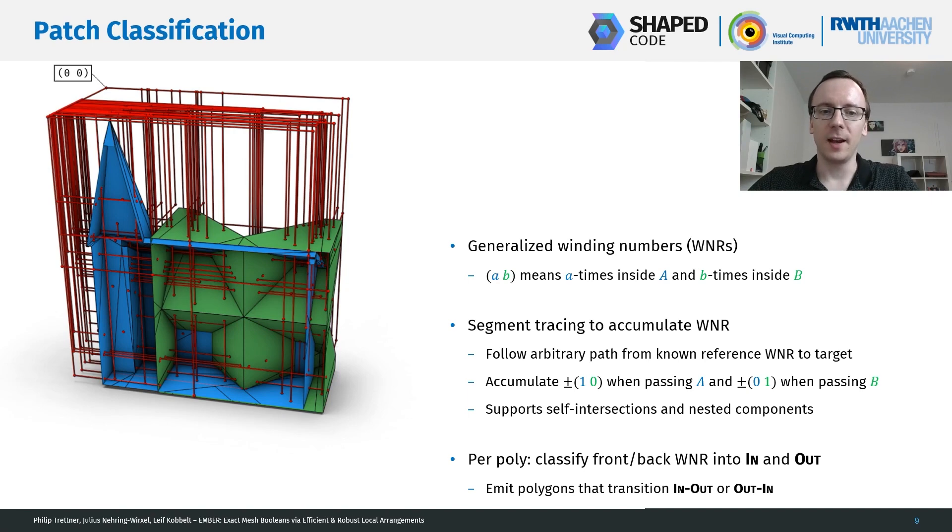Now, after we've classified each patch, we have a winding number in front and a winding number in the back of each patch. A winding number itself can then be classified to in or out, depending on the operation that we're currently performing. And the polygons that we want to emit are exactly those that transition from in-out or out-in.